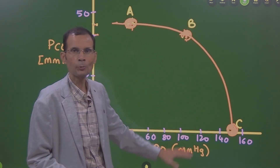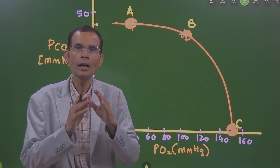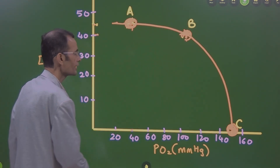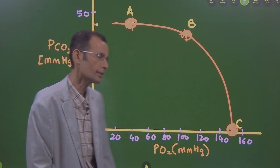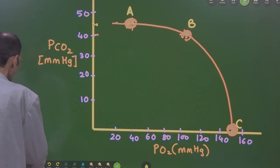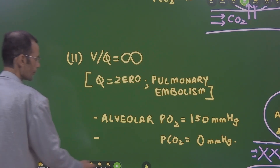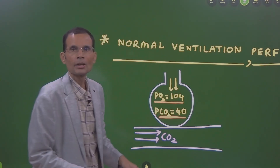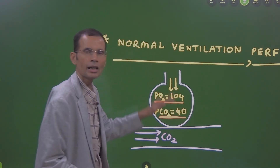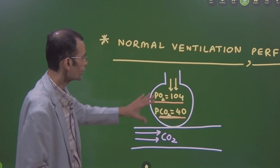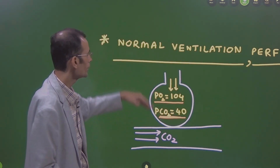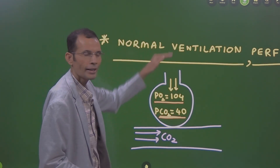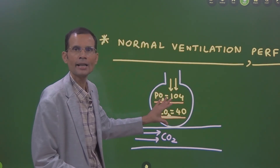Let us focus on these three points and which point depicts pulmonary embolism. Let us understand the details and come to the answer. What is the ventilation-perfusion relationship? Ventilation means air is ventilating the alveoli — inspired air is reaching the alveoli, so the alveoli are ventilated normally.